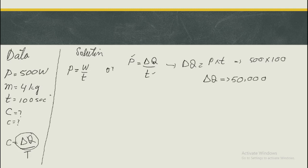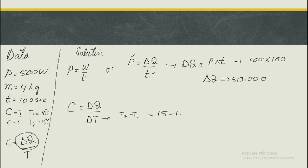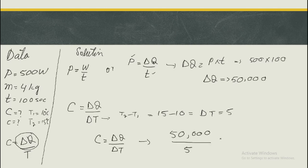Once we have the value of delta q، ہم heat capacity find کر سکتے ہیں: heat capacity c = delta q / delta t۔ Change in temperature = final − initial = 15 − 10 = 5۔ Putting values: c = 50,000 / 5 = 10,000 joules per kelvin۔ یہ heat capacity کا unit ہے۔